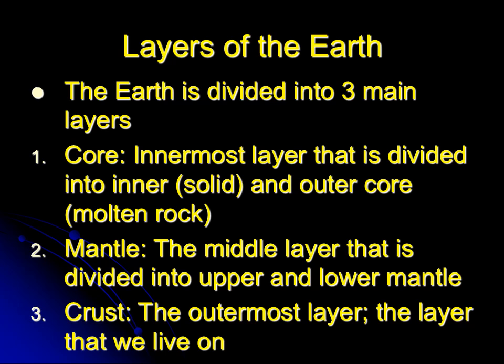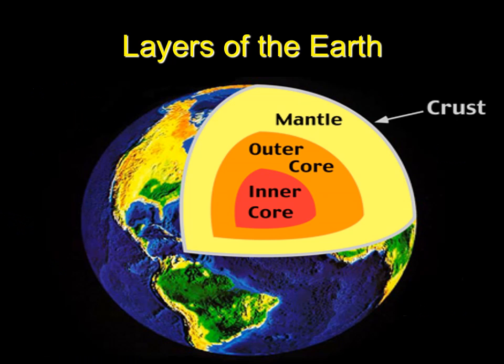The earth is divided into three main layers. There's the core, which is divided into the inner core and the outer core. The inner core is solid and the outer core is molten rock — really hot rock that's not quite a liquid and not quite a solid. Then there's the mantle, which is the middle layer, divided into the upper and lower mantle, and finally the crust, which is the layer that we live on.